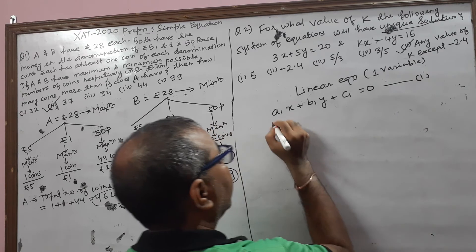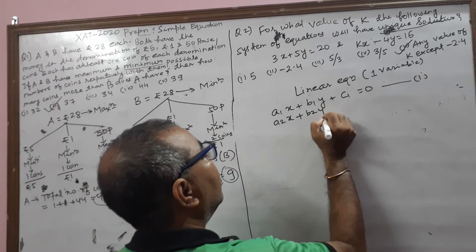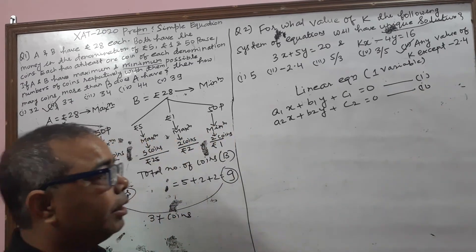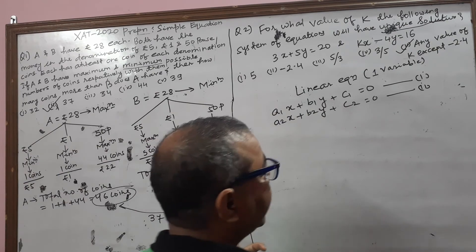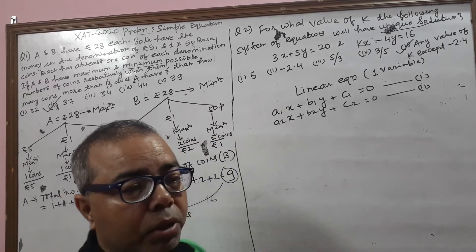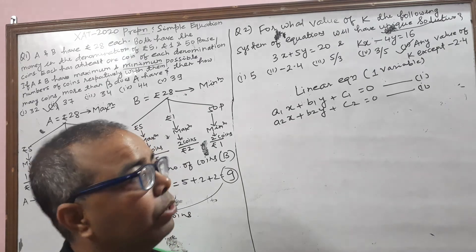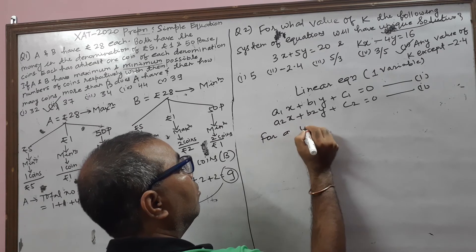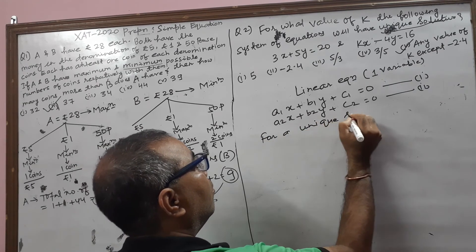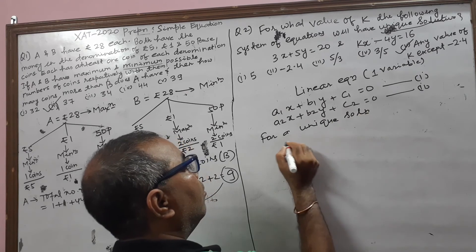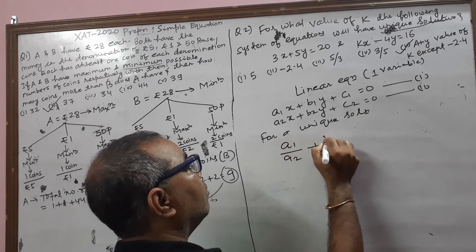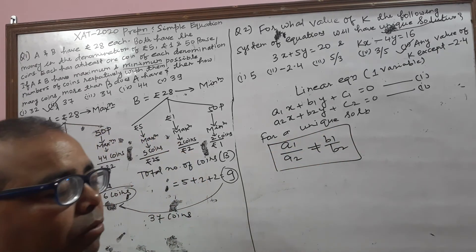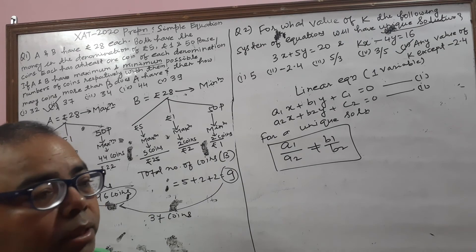And A2x plus B2y plus C2 equal to 0, this is equation 2. If there are two simultaneous linear equations, on that condition three conditions follow: infinite number of solutions, no solution, and unique solution. Here we have to find out the unique solution. For a unique solution, A1 by A2 is not equal to B1 by B2. This is the equation we are following in the linear equation when solving for a unique solution.